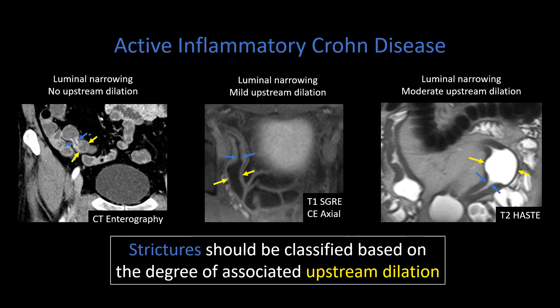Here are examples of active inflammatory Crohn's disease with stricture. On CT, you can see a very short segment stricture characterized by two blue arrows with inner wall hyper-enhancement and luminal narrowing, but without upstream dilation — so we can't definitively call this a stricture, although the patient is certainly at risk. In the next case on a T1 post-contrast image, we can see a longer segment of luminal narrowing with inner wall hyper-enhancement, some degree of mural stratification, and mild upstream dilation — so we can confidently characterize this as a stricture with mild upstream dilation.